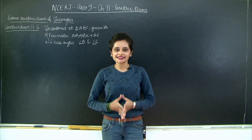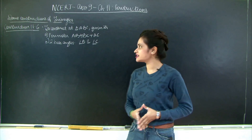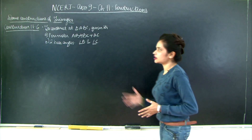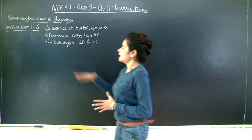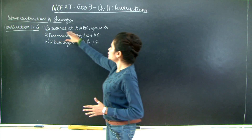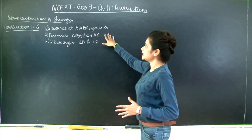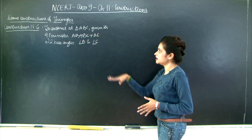Hello students, let us continue with Chapter 11, Constructions. Let's take a look at the last type of construction — that's when you need to construct a triangle ABC given its perimeter.